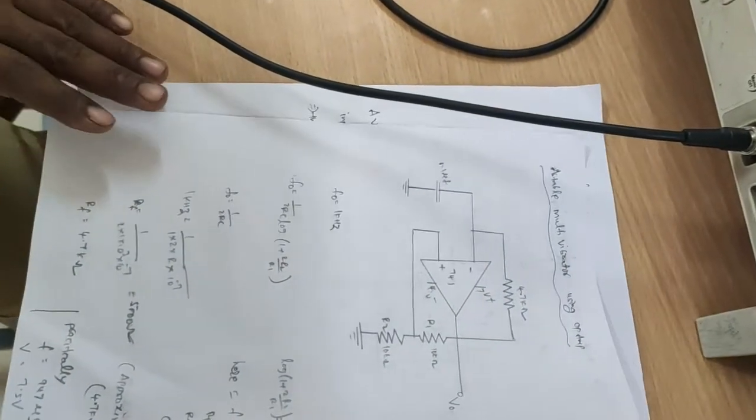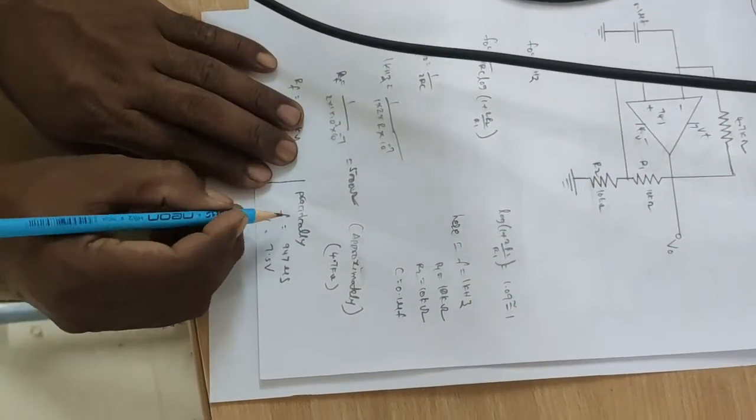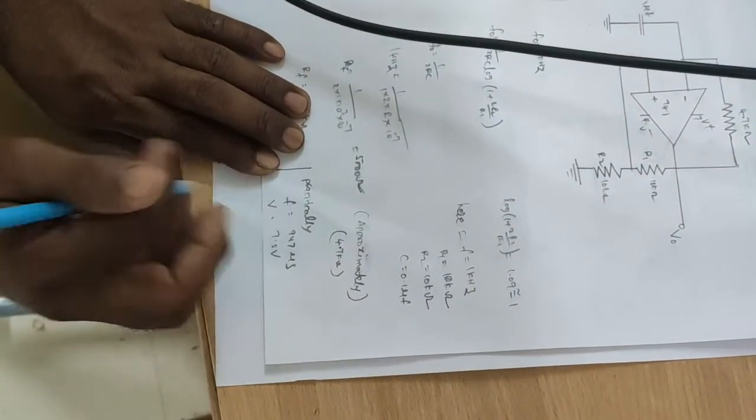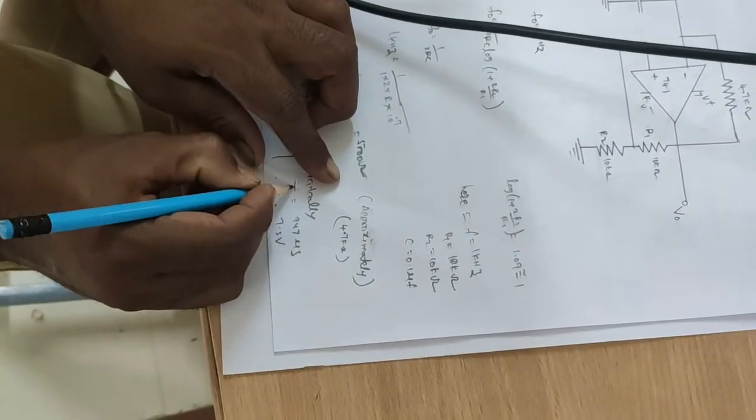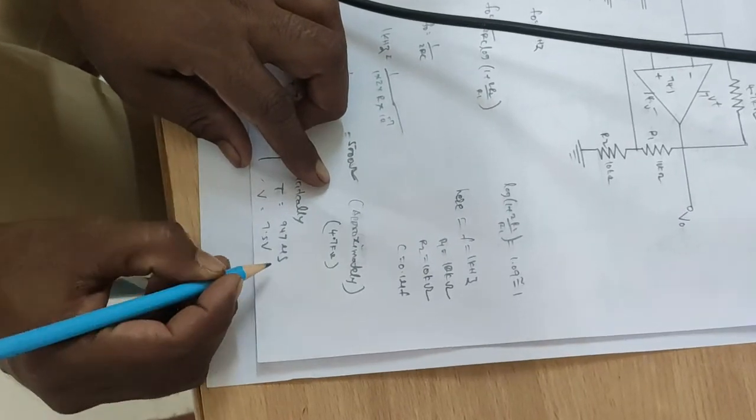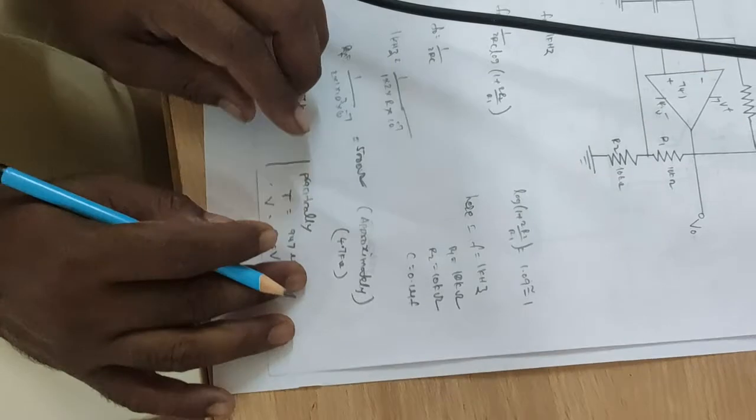This is the astable multivibrator using op-amp. This is not frequency, this is the time period. Here time period equal to 947 microsecond and V equal to 7.5 volts.